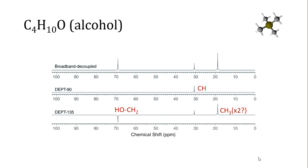Using the DEPT spectra: the peak at 30.5 ppm gives a positive peak in both DEPT 90 and DEPT 135, so it must be a CH group. The peak at 69 ppm gives a negative peak in DEPT 135, so it must be a CH2 group. The peak at 19 ppm is positive in DEPT 135 and missing from DEPT 90, so it is a CH3 group — and because it's the tallest peak, there are likely two CH3 groups. Putting this together, the structure is 2-methyl-1-propanol, or isobutanol. This concludes our discussion of carbon-13 NMR spectroscopy.